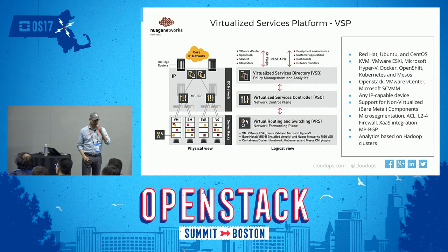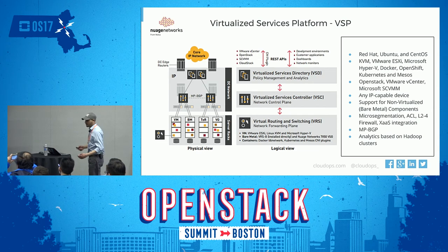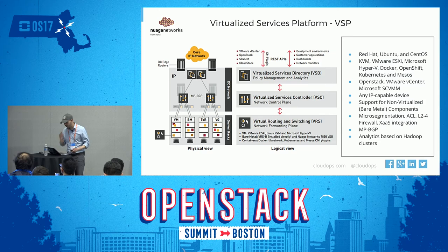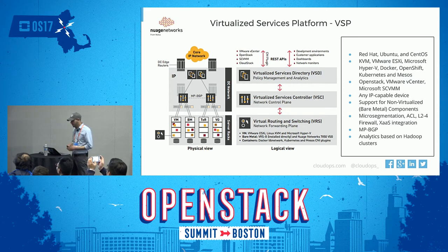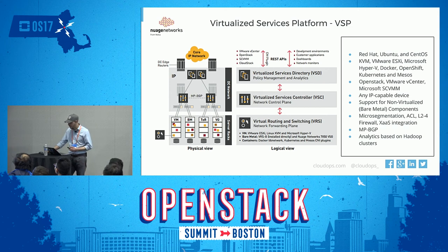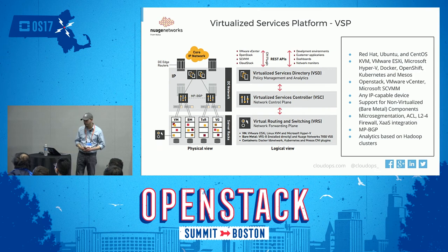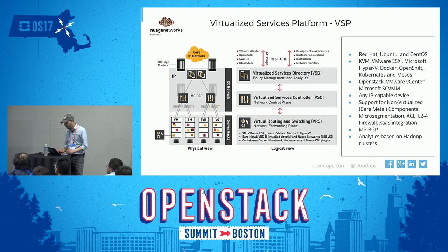Nuage Networks — a very cool solution. This is what I call the Ferrari of SDN solutions, because it supports everything: VMware, OpenStack, CloudStack, containers, OpenShift, Kubernetes, all hypervisors, multiprotocol BGP, access control lists, service chaining for layer 2 and layer 4. Analytics based on Hadoop, which is also very interesting. Check it out.